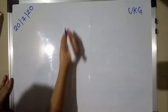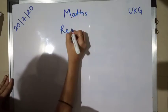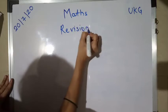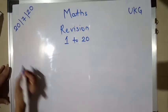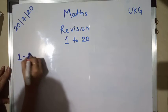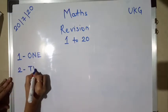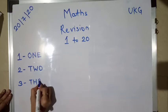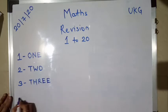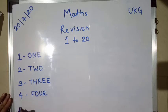Hello students, today we are going to revise numbers from 1 to 20. So, 1 O-N-E one, 2 T-W-O two, 3 T-H-R-E-E three, 4 F-O-U-R four, 5 F-I-V-E five.